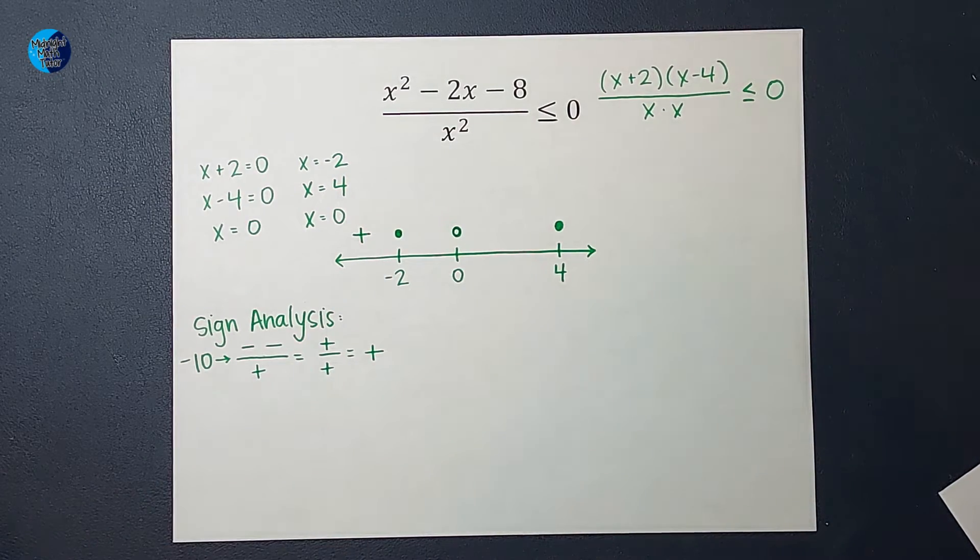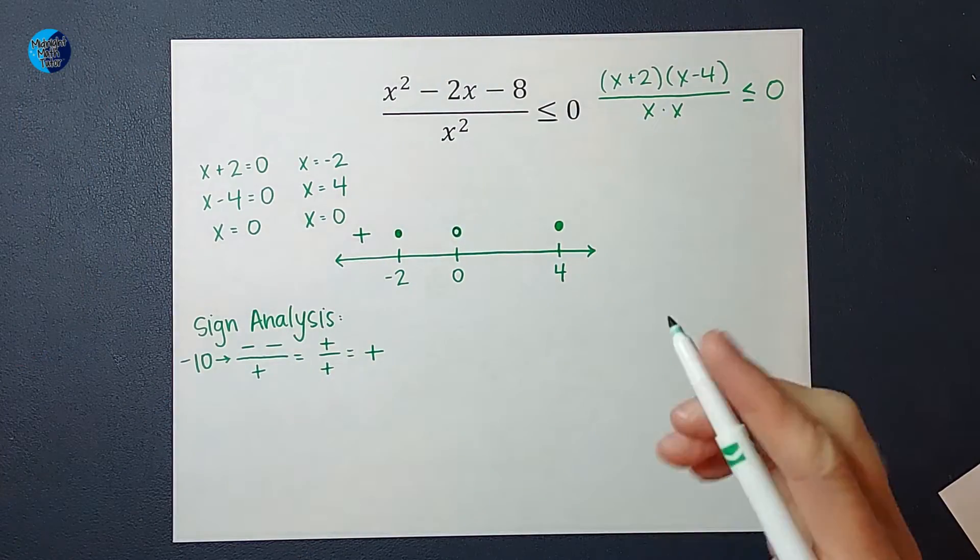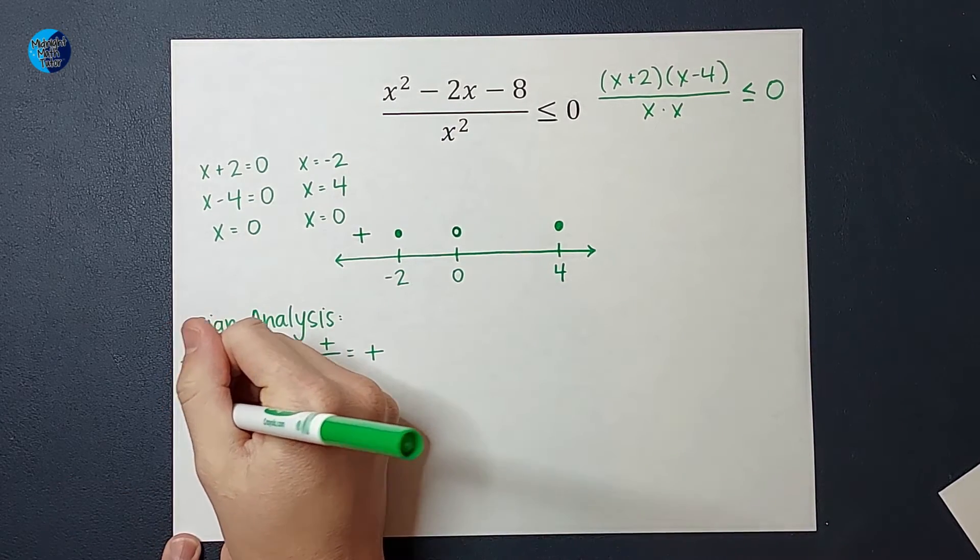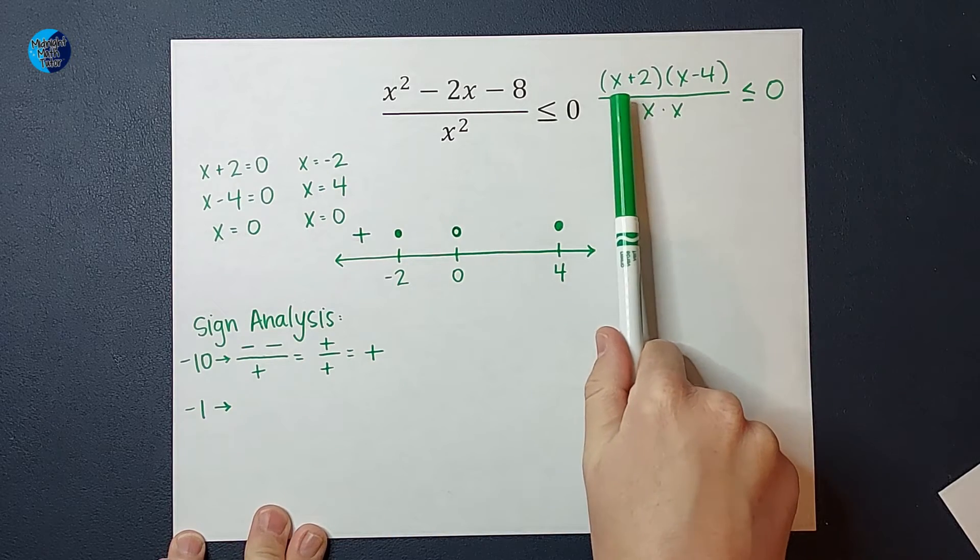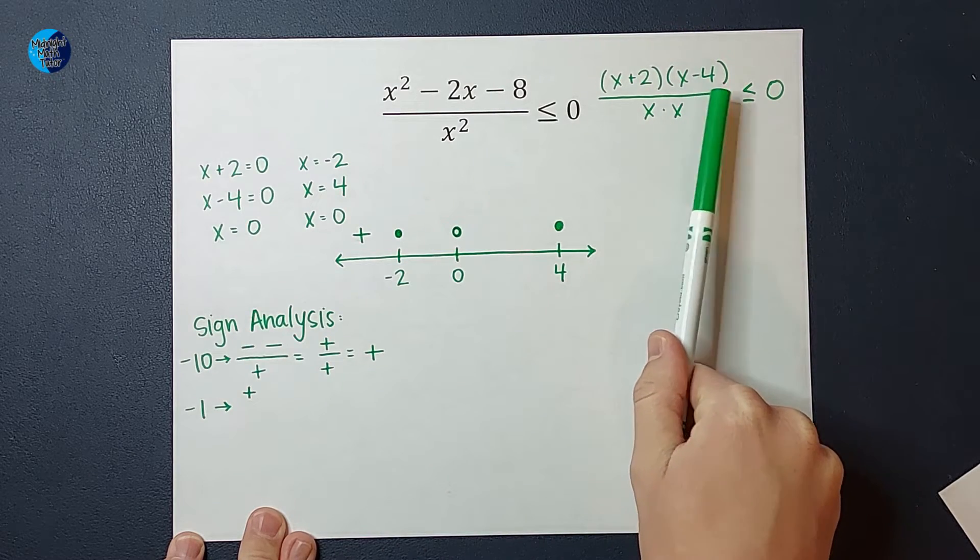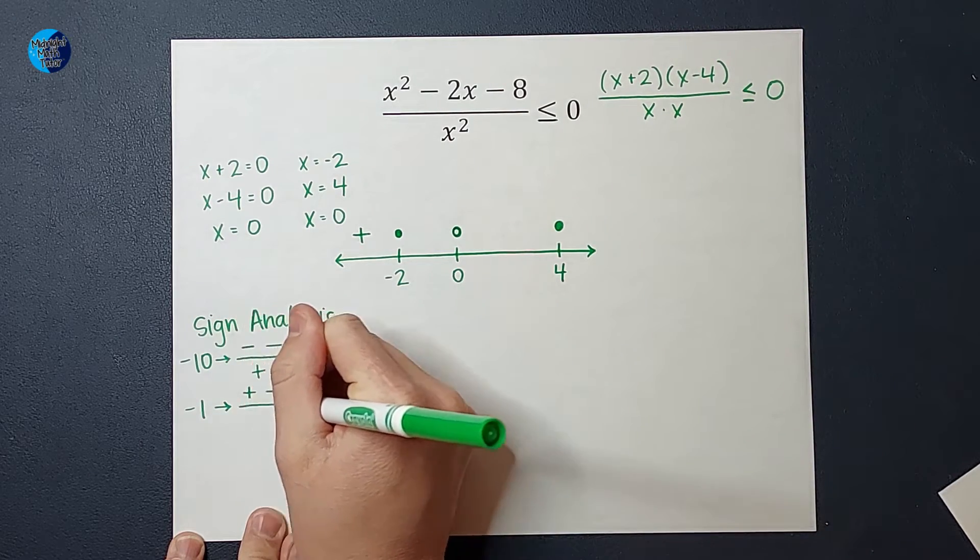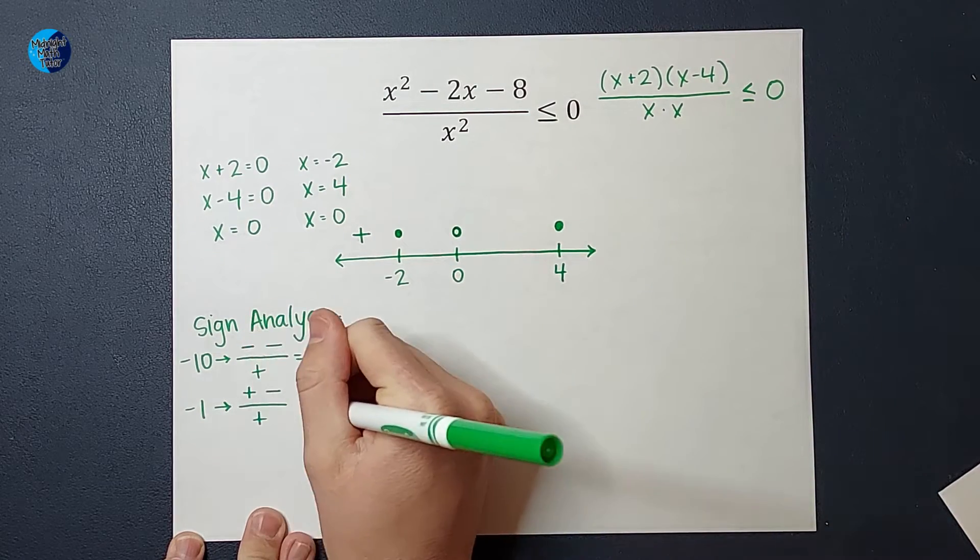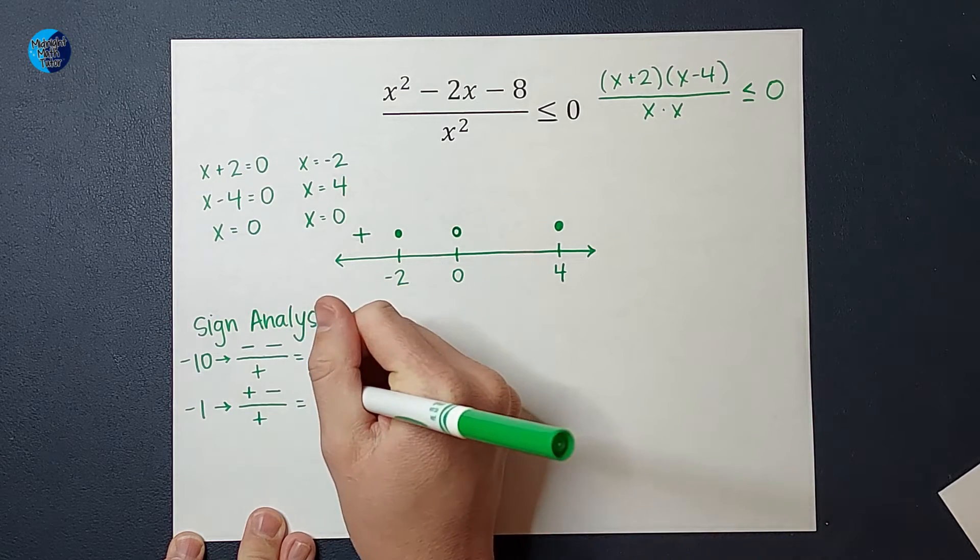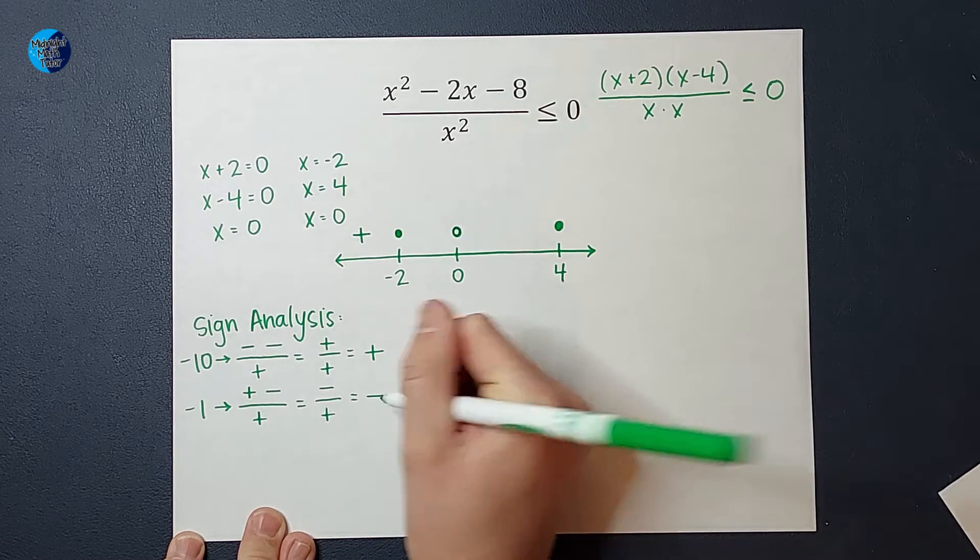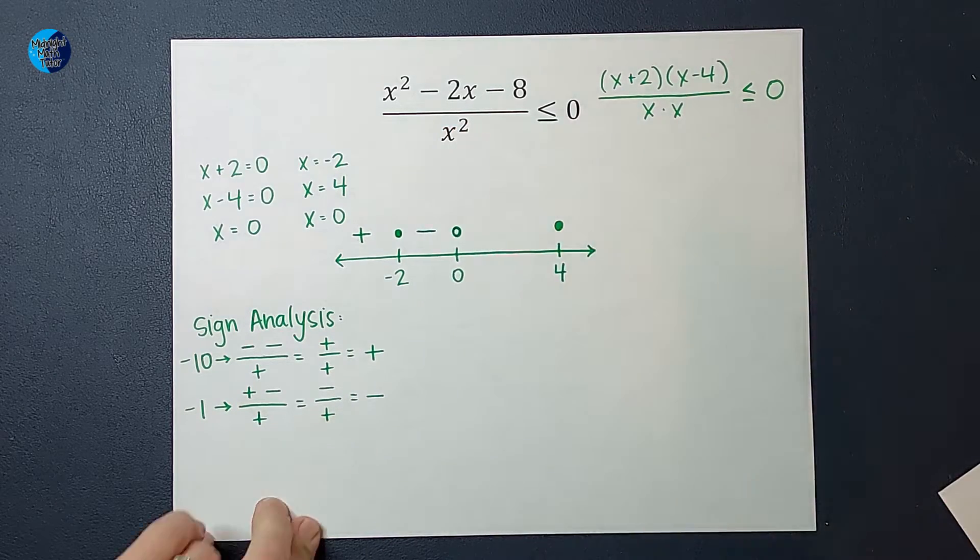Again, if you're like, what is she doing? Stick around for the end when I explain all. Now we're going to pick a number between negative 2 and 0. Let's pick negative 1. When I plug that guy in, I get negative 1 plus 2, which would give me a positive number. Negative 1 minus 4, which would give me a negative number. And then a negative 1 times a negative 1 would give me a positive. So then on top, I'd have a positive times a negative, which is negative. On bottom, I have a positive negative divided by a positive is negative. So this region here is negative.